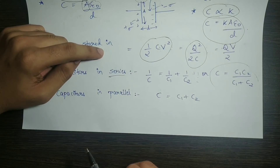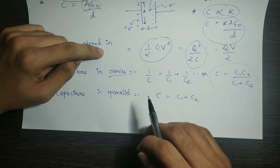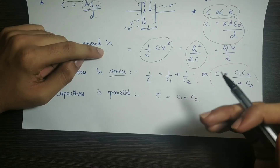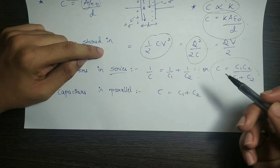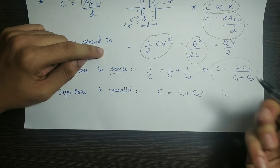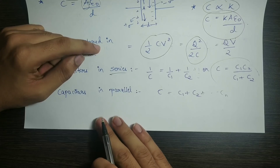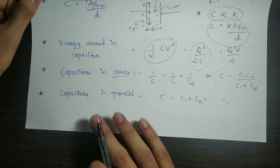Capacitors in parallel behave like resistors in series: C equals C₁ plus C₂ plus ... up to Cₙ, in case there are N capacitors.